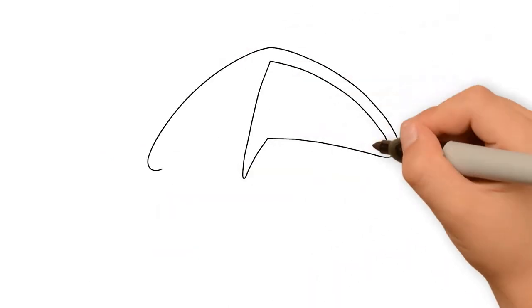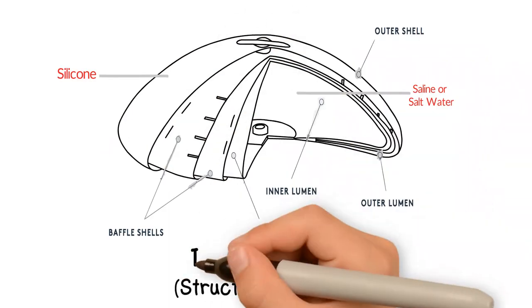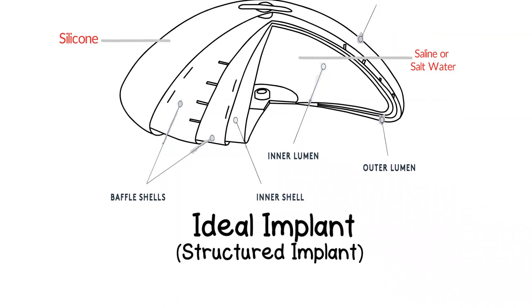There is also a newer generation of implants on the market called structured implants, also known as the ideal implant. These are saline-based implants with a silicone shell that is meant to look and feel similar to silicone implant.